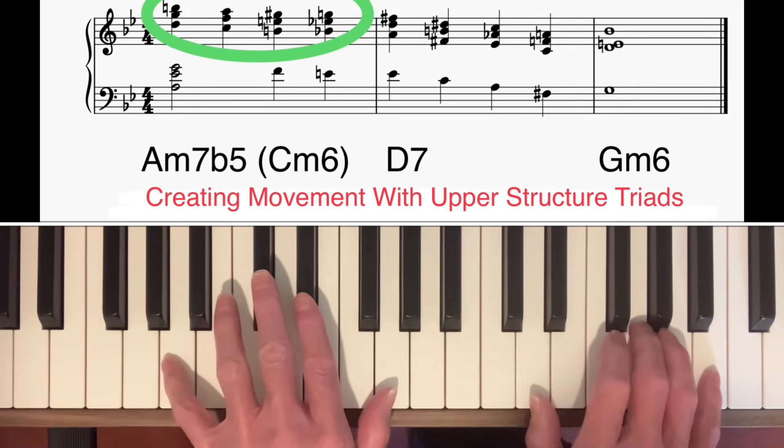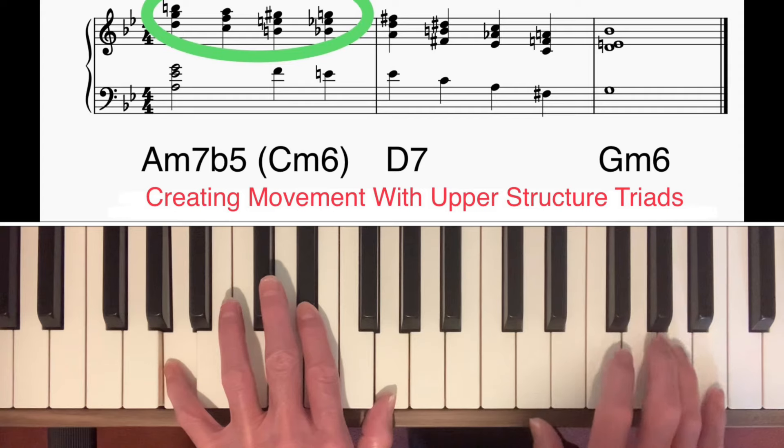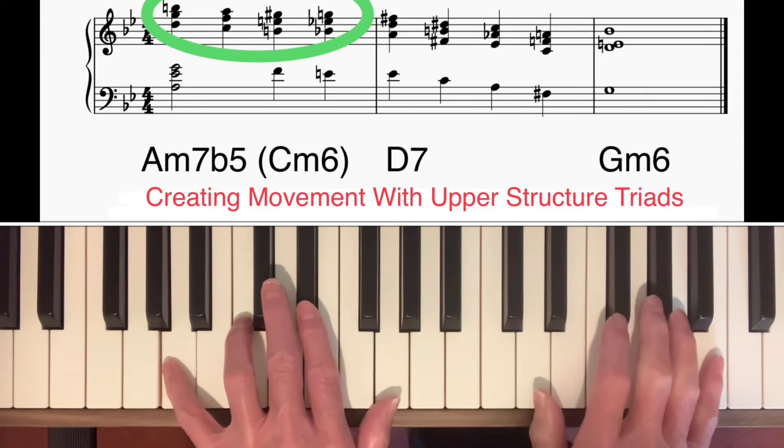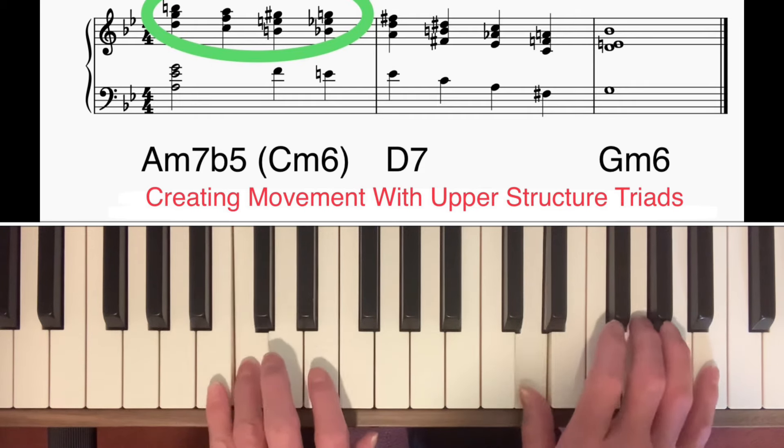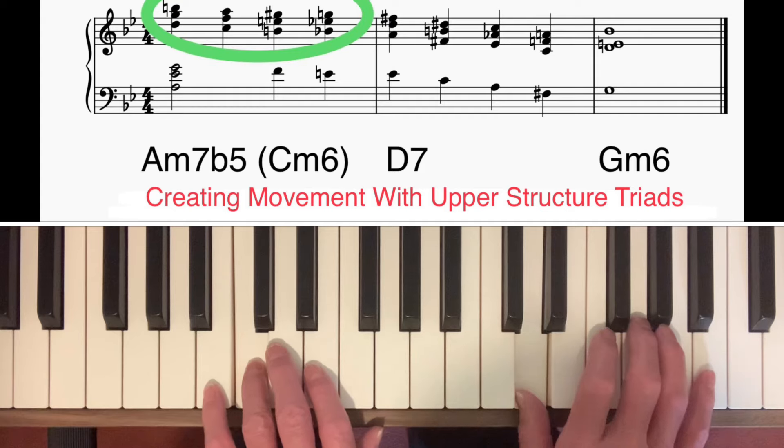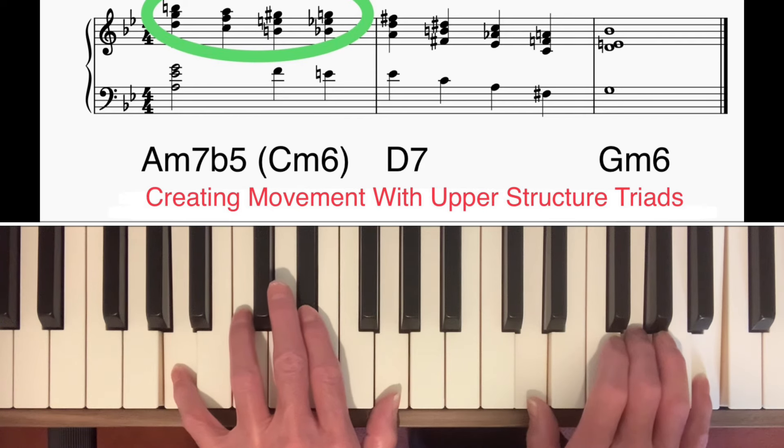Now, really they function as upper appoggiaturas. D being an upper appoggiatura to C and B to A. That's why I've missed C out of the left hand. Because if I put it in, I think that's a little bit too tense myself. You get that clash in the middle. To a certain degree, this kind of thing is subjective and some people may think that's absolutely fine. I just think it's a bit too tense. I prefer it like that.